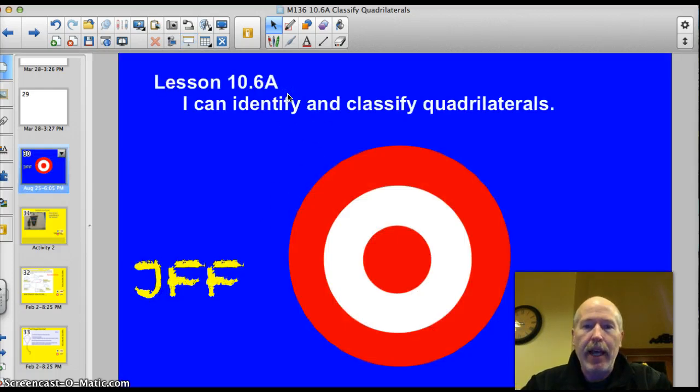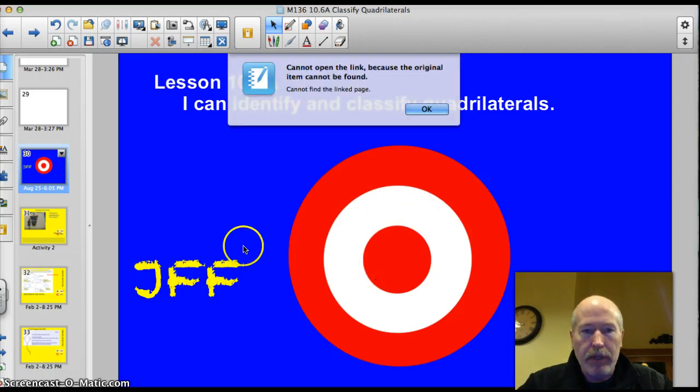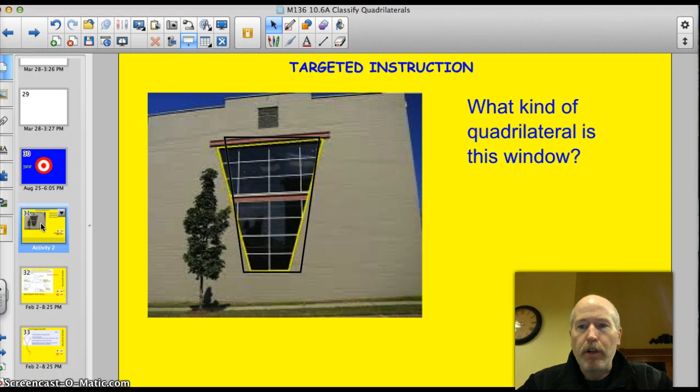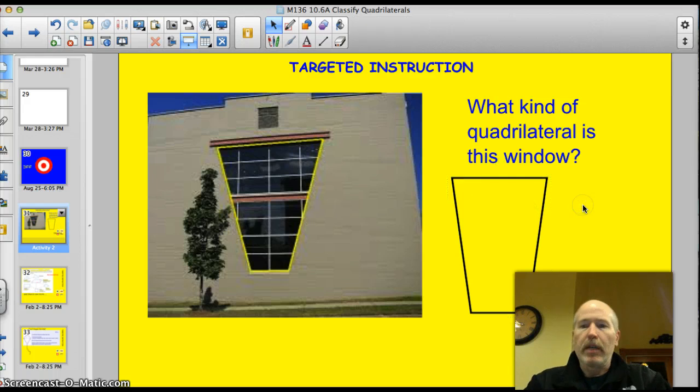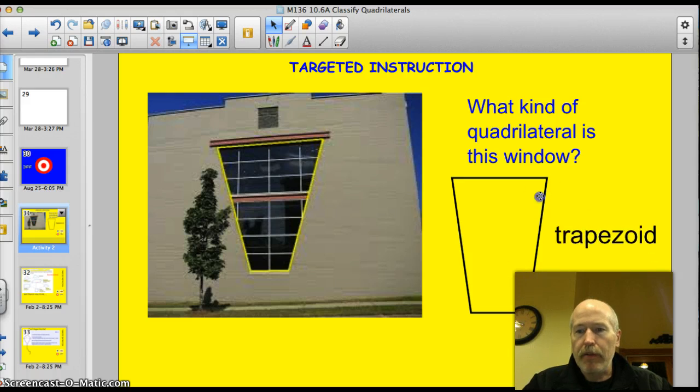The official target tonight is 10.6a. I can identify and classify quadrilaterals. Let's do this thing. Very simple question: what kind of quadrilateral is this window? Let me slide away this image and give you a better look at it. It's upside down. We don't usually see them this way, but it's still a trapezoid. A trapezoid has two parallel lines, or one set of parallel lines. The other set is not parallel.